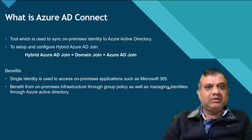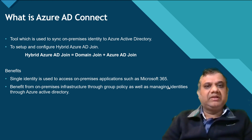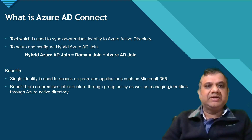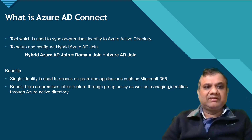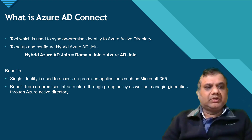Once Azure AD Connect sync and installation is set up, you can go and do the Hybrid Azure AD Join configuration as well. Hybrid Azure AD Join is a concept where, in layman's terms, your device is both domain-joined and Azure AD joined. If you already have Active Directory, you're already domain-joined, but if you want the flexibility of Azure AD Join, you go with Hybrid Azure AD Join — and that requires Azure AD Connect. The benefit is a single identity usable for on-premises applications, Microsoft 365, and other cloud applications.